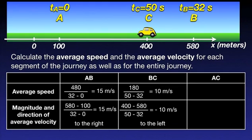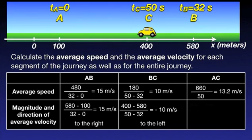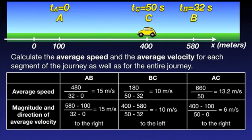Let's now calculate the two quantities for the entire journey. The total distance travelled is 480 plus 180, which equals 660 meters in 50 seconds, giving an average speed of 13.2 meters per second. The displacement is 400 minus 100, which equals 300 meters in 50 seconds, giving an average velocity of 6 meters per second — positive, so pointing to the right. Here, the magnitude of average velocity is no longer equal to the average speed. An average speed of 13.2 meters per second tells us the car covers 13.2 meters each second on average, while an average velocity of 6 meters per second tells us that after 50 seconds, the car is 300 meters to the right of the starting point.